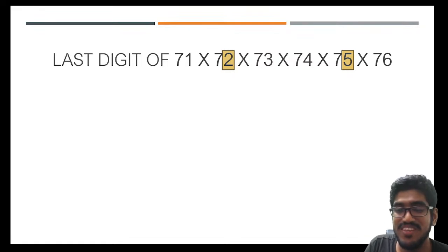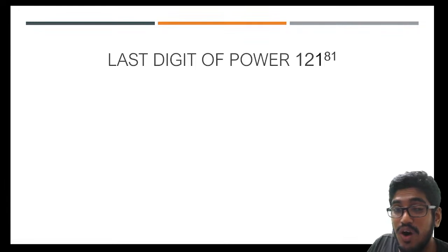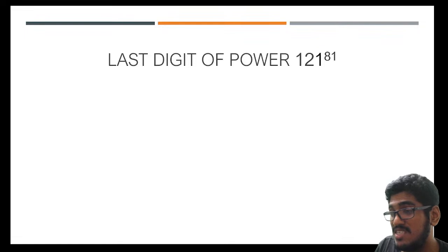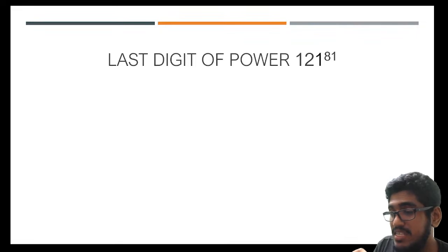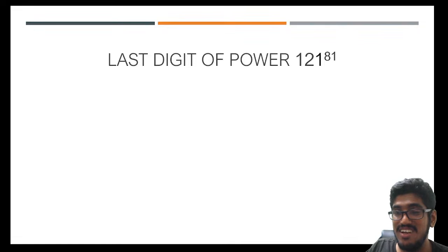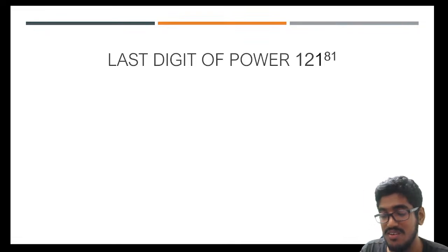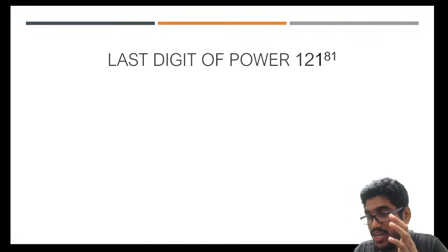Going forward, what about the last digit of 121 to the power 81? The exponent is 81 and the base is 121. It turns out the answer is 1 — but things are not always going to be as simple as this, and that's where our observations today are going to help us.